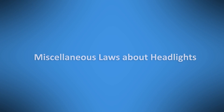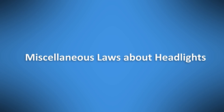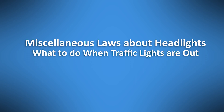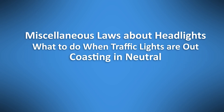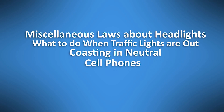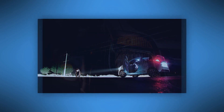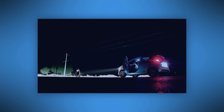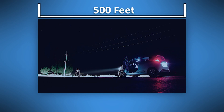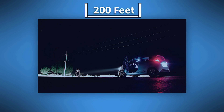Let's finish with a brief look at a few miscellaneous laws about headlights, what to do when traffic lights are out, coasting in neutral, and cell phones. Indiana requires the use of headlights if you can't clearly see someone who is 500 feet ahead. 500 feet is also the legal distance for reducing your high beams when there's oncoming traffic, and you have to do the same when you're 200 feet or closer behind someone.